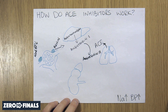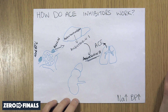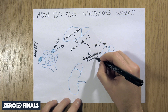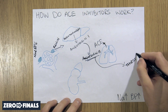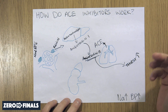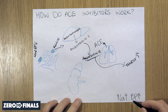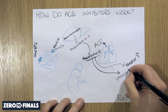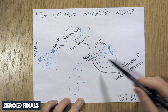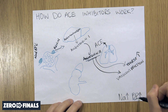Angiotensin II is important because it actually does something. It does a few things, but all of them essentially amount to an increase in blood pressure. First, it acts directly on the thirst center — it increases thirst. If you increase thirst, you drink more water, and that water increases the volume in your blood, essentially increasing your blood pressure. The second thing it does is vasoconstriction. Angiotensin II vasoconstricts your blood vessels, and if you constrict them, you increase the pressure.